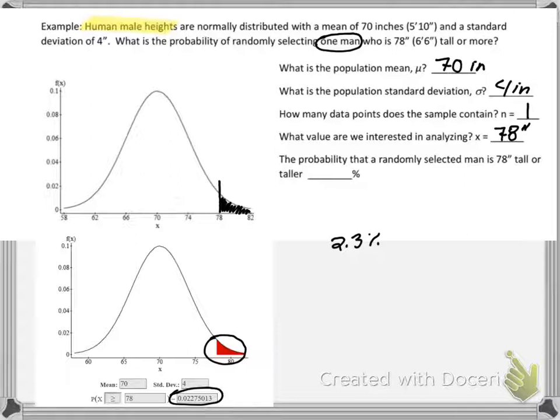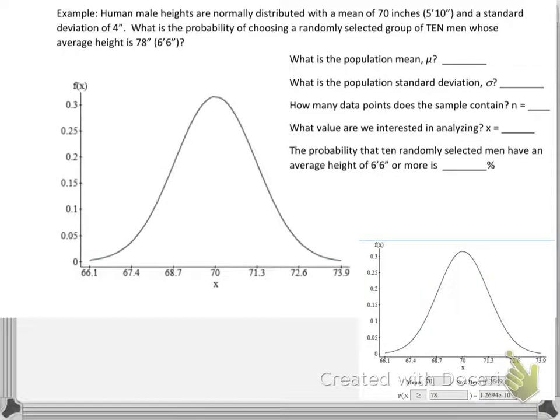So now let's look at what happens when we change our n. So let's look at this one. So now we have, again, the same exact population mean. It's still 70 inches. That hasn't changed. The population standard deviation has not changed. This is still 4 inches. But the question they're asking us has changed. They're not asking us about a single man anymore. They're asking us, what is the probability of selecting a random group of 10 males whose average height is 6 and a half feet or taller? So that means what's changed? Our n has changed. So we're looking at this randomly selected group of males. Right. So there's 10 people, 10 men in this example.